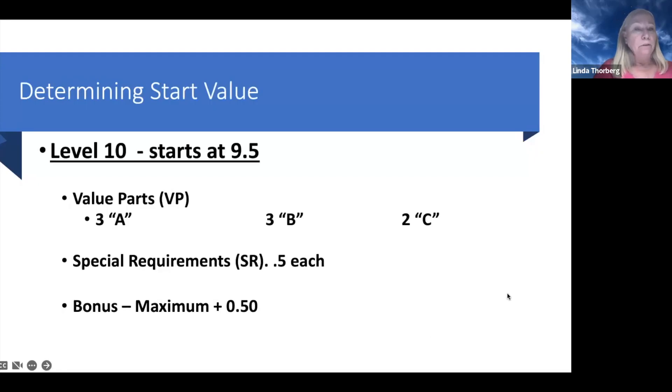Our start value at level 10 starts at a 9.5. We are looking for three A's, three B's, and two C's. Make sure that you count those elements all the time. Most of the routines have more than enough elements, but every now and then one will seem kind of short. Remember that when you're counting those elements, a higher level skill, a C or a D or an E, can always count for a lower valued skill, like a B or an A, if needed.